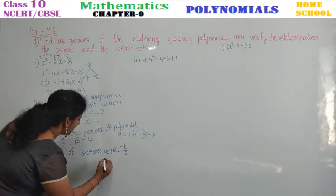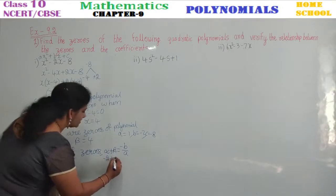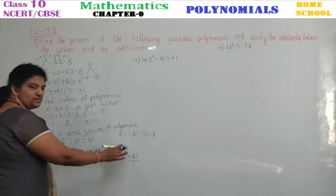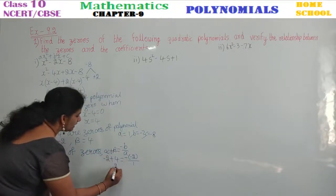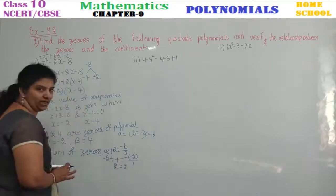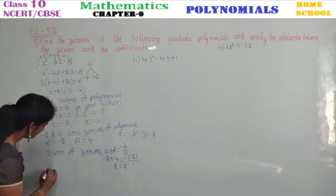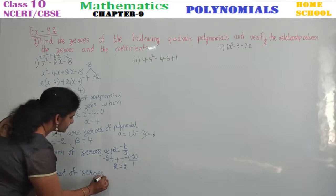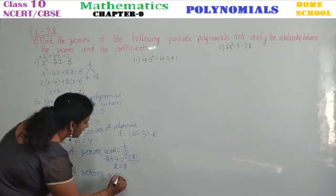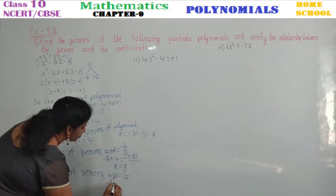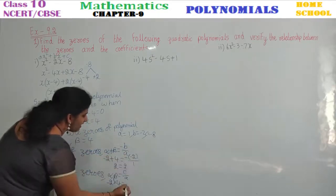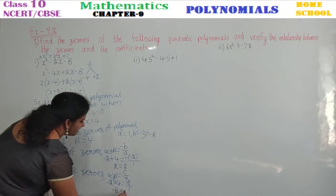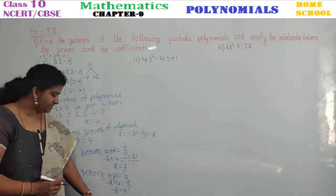Alpha = -2, beta = 4, and b = -2, a = 1. So alpha + beta = -2 + 4 = 2, and -b/a = -(-2)/1 = 2. Both are equal. Next, product of zeros: alpha × beta = c/a. So (-2) × 4 = -8, and c/a = -8/1 = -8. Both are equal, so minus 8 equals minus 8.